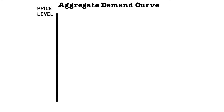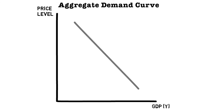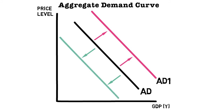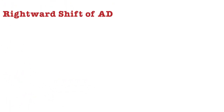All five components make up aggregate demand. Looking at how they come together on a curve: we have the price level on the Y-axis, GDP on the X-axis, and this downward sloping line represents the aggregate demand curve, showing a negative relationship between price and GDP. The curve can shift rightwards to AD1, indicating an increase in aggregate demand at every price level, or shift leftwards, indicating a decrease in aggregate demand at every price level.